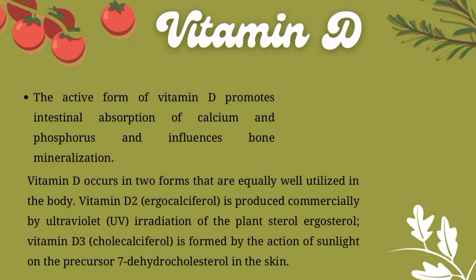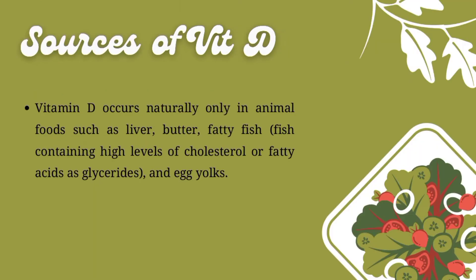We can also produce Vitamin D in our own body. The sources of Vitamin D occur naturally only in animal foods such as liver, butter, and fatty fish. Fish containing high levels of fatty acids as glycerides and egg yolks are also good sources.